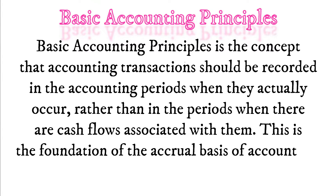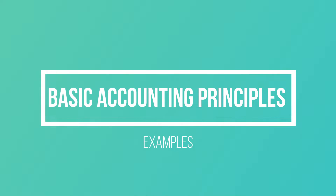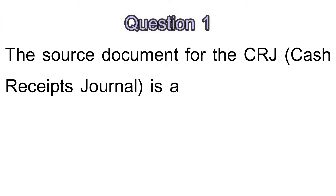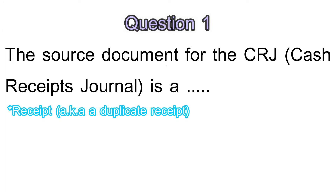Let's begin with our examples. Question 1: the source documents for the CRJ — cash receipts journal. The first one is a receipt, also identified as a duplicate receipt. It is addressed to a specific person or business. A receipt is issued when the business receives money, for capital, or from people that owe money.